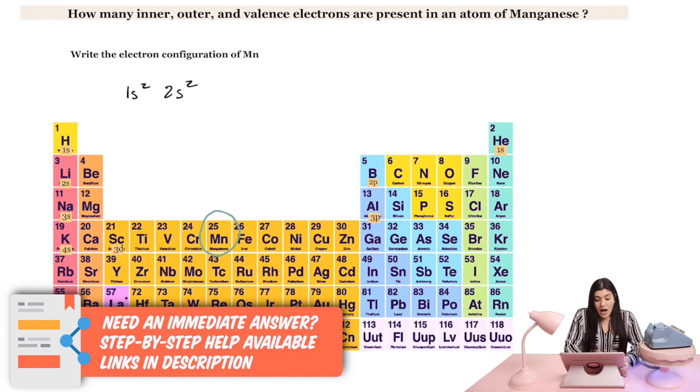Continuing from that point, I'm going to go all the way across. And then now we're still in the second row, but now we're in the P block. So this is 2P, 1, 2, 3, 4, 5, 6. So I'll write that 2P6.